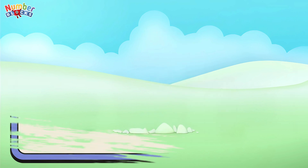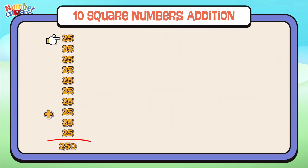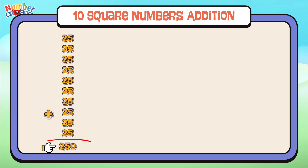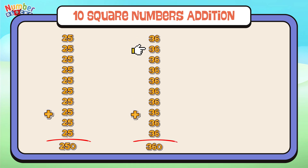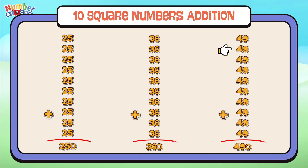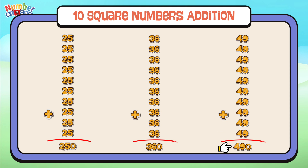Let's sum up — 10 squared number addition. 25 plus 25 plus 25 plus 25 plus 25 plus 25 plus 25 plus 25 plus 25 is equal to 250. 36 plus 36 plus 36 plus 36 plus 36 plus 36 plus 36 plus 36 is equal to 360. 49 plus 49 plus 49 plus 49 plus 49 plus 49 plus 49 plus 49 is equal to 490.